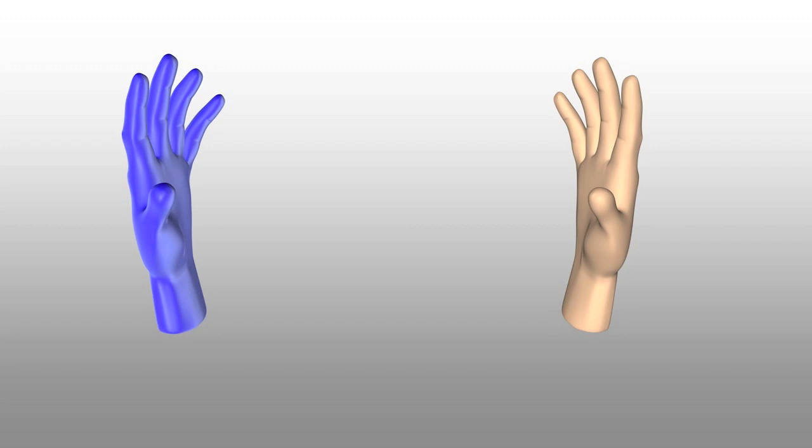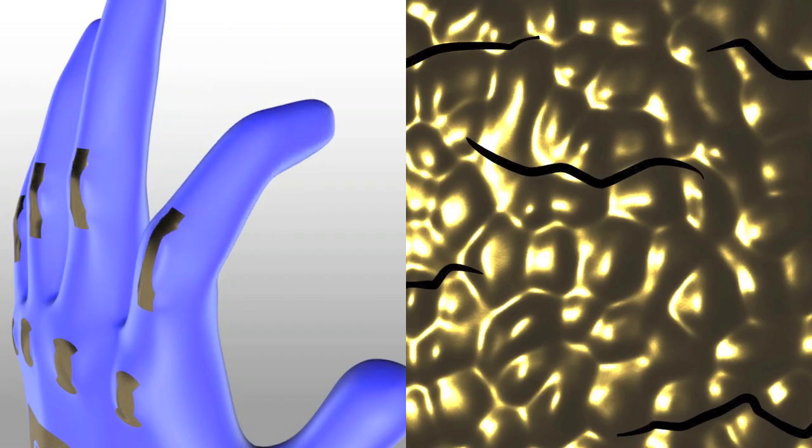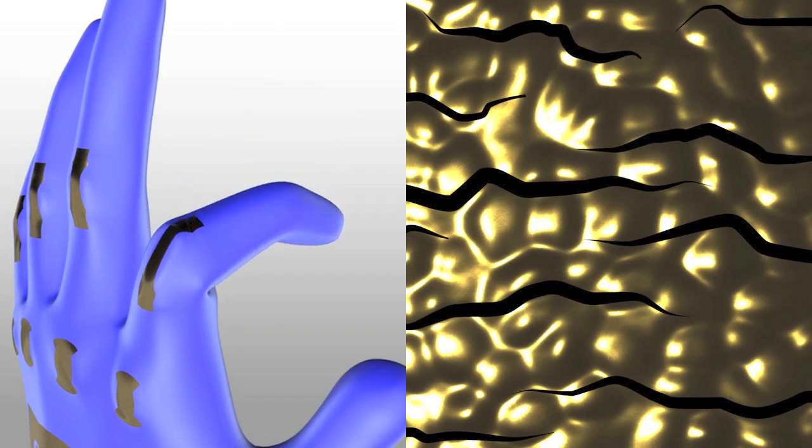To achieve this, we took an ordinary glove and put metal strain sensors at the joints of each finger. These gold patches crack when a joint is bent, and the amount of cracking is proportional to how much strain is applied on the sensor.